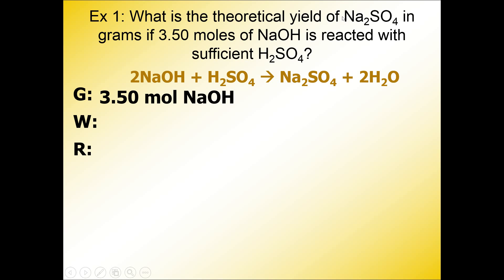Now given 3.50 moles of NaOH, the only number given, since we want Na2SO4 in grams, that's going to be our want. And notice that Na2SO4 is a product, which means we can calculate a percent yield for it because yield means product. And when it comes to the relationships, we're going to use the same process that we have in the other lessons.